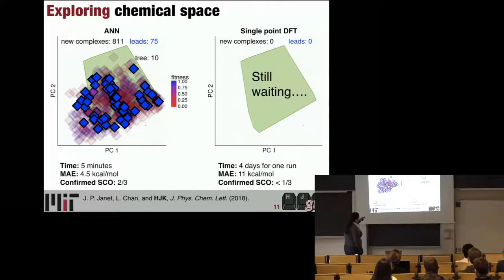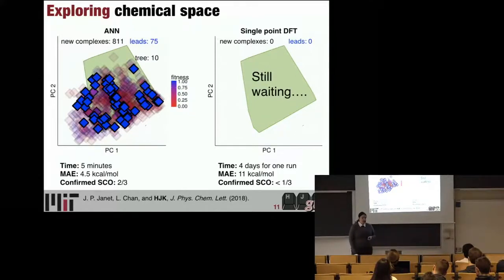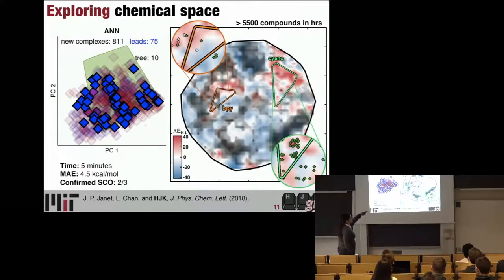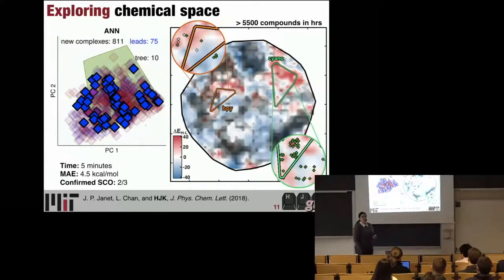The result is we have an average error of about 4.5 kcal/mol, and we're able to confirm about two-thirds of the complexes the neural net thought were spin crossover still as spin crossover with DFT. One thing to note is this T-SNE of the space we were working in — we're looking for these white crevices, that's where the spin crossover complexes are. The black overlay is where we're not so confident about the neural net because these are high-distance compounds. Only 2% of the space had ever been seen before by the neural net — so almost all of it was completely unseen compounds.